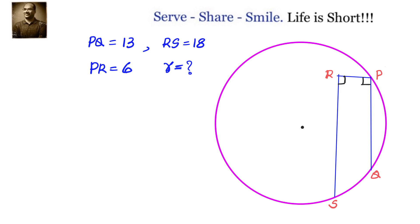We know that from the center if you drop a perpendicular it will bisect the chord. That means PQ is divided into two parts, 6.5 and 6.5, or 13 by 2 and 13 by 2. Now in that case what will be the length of RS divided into?